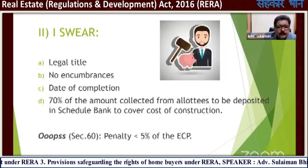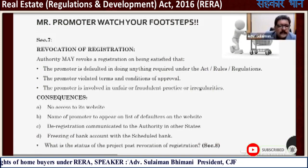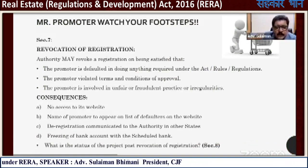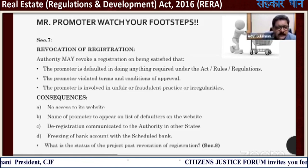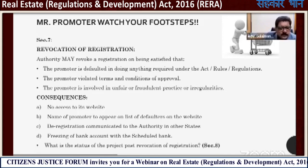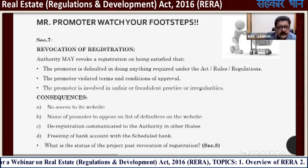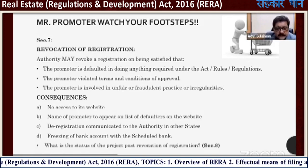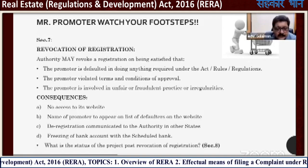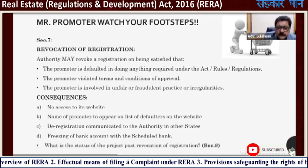Under Section 60, a penalty of up to 5% of the estimated cost of the project applies. Under Section 7, the RERA authority may revoke a registration if the promoter defaults in doing anything required under the Act, violates terms and conditions of approval, or is involved in unfair, fraudulent practice or irregularities. Consequences include no access to the website, the promoter's name appearing on the list of defaulters, deregistration communicated to authorities in other states — meaning he will be blacklisted throughout India — and freezing of his bank account.